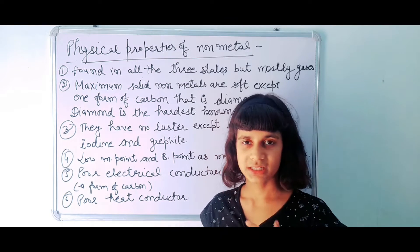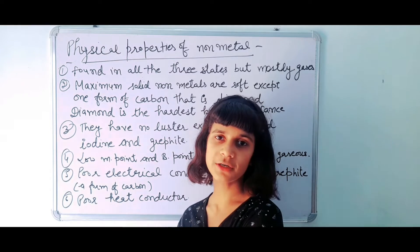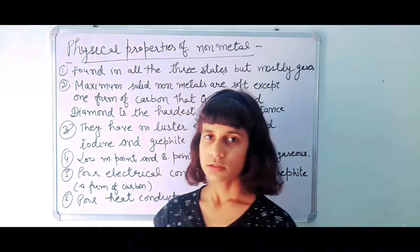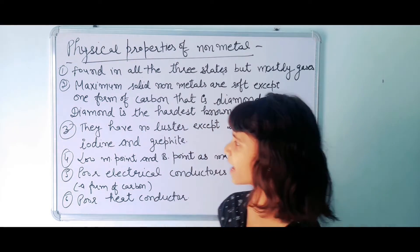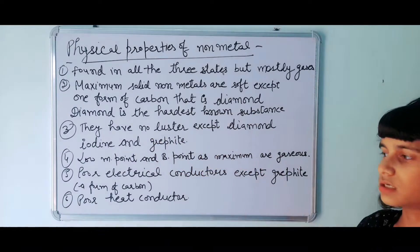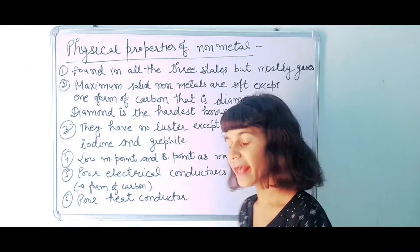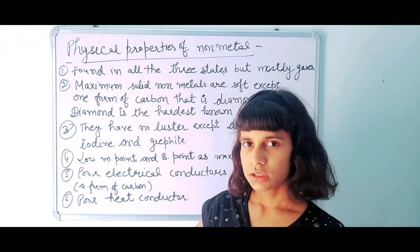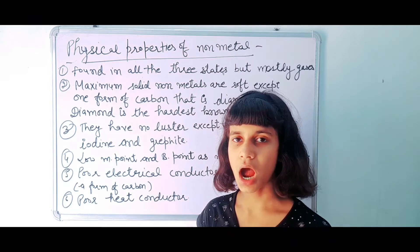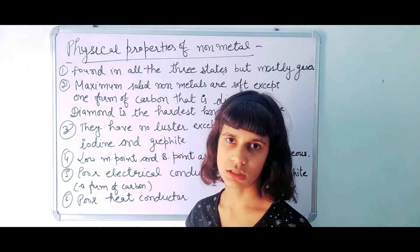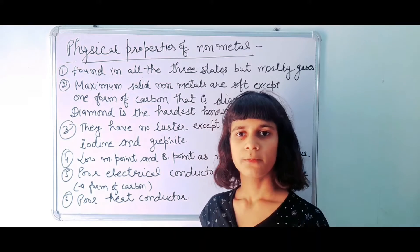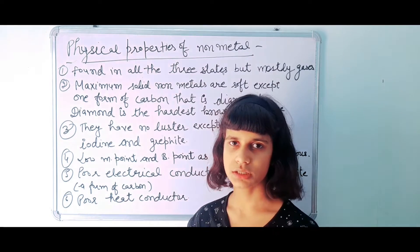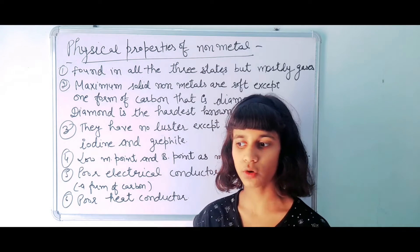For extra information, diamond is made up of carbon. Our next point is that non-metals have no luster, except diamond, iodine, and graphite — these three non-metals have luster. But except these three, no non-metals have luster or shine.